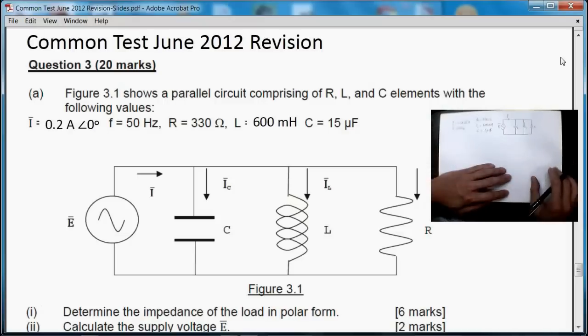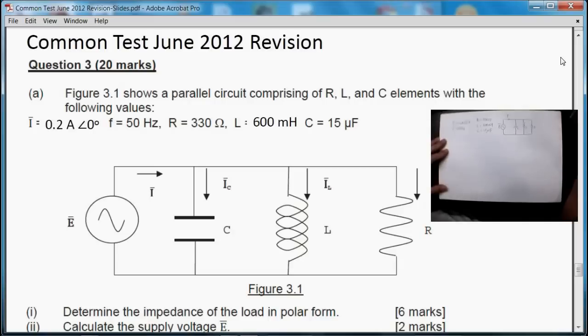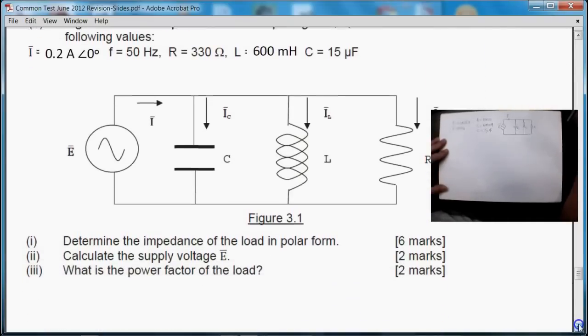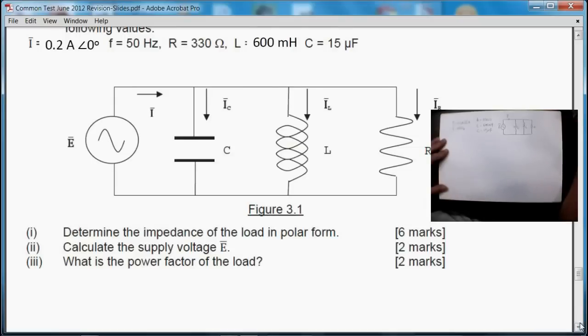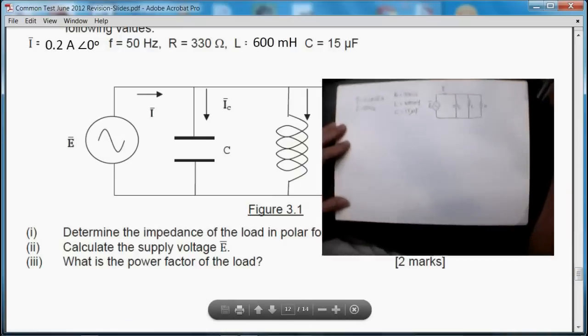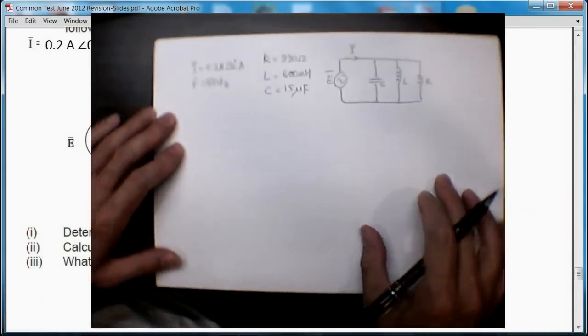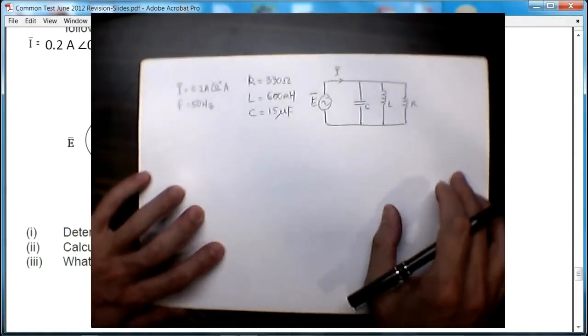Now what does the question want us to try? First, determine the impedance of the load in polar form. Secondly, calculate the supply voltage E. And finally, determine the power factor of this load comprising of the capacitor, inductor, and resistor. Well, let's begin. I've drawn roughly a little circuit like that, right?